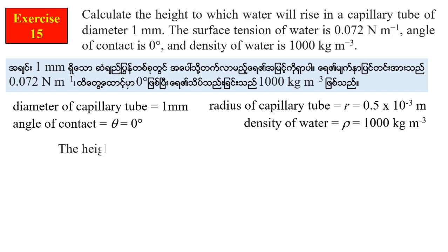The surface tension of water is 0.072 Newton per meter. The density of water is 1000 kilogram per cubic meter. Using the formula H equals 2T cosθ divided by ρ g r.